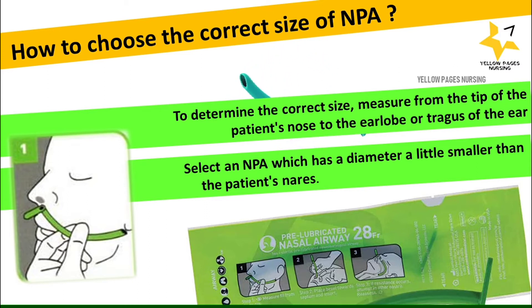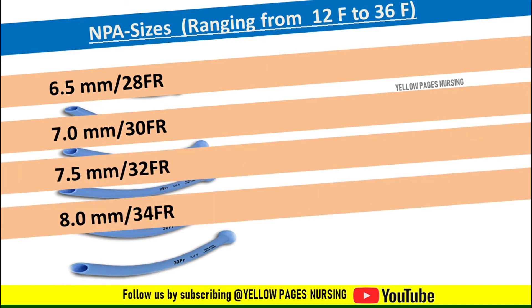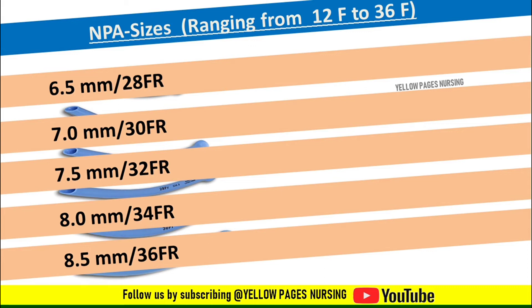Pre-lubricated nasopharyngeal airways are also available. The sizes range from 12 French to 36 French. The recommended sizes are: large adult — 8 to 9 millimeter (34–38 French); medium adult — 7 to 8 millimeter (30–34 French); small adult — 6 to 7 millimeter (26–30 French); and for children, 12 French size is commonly used.